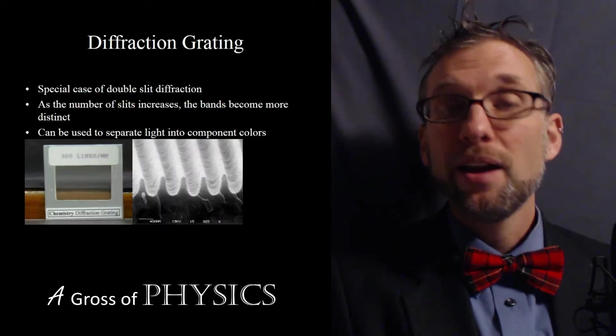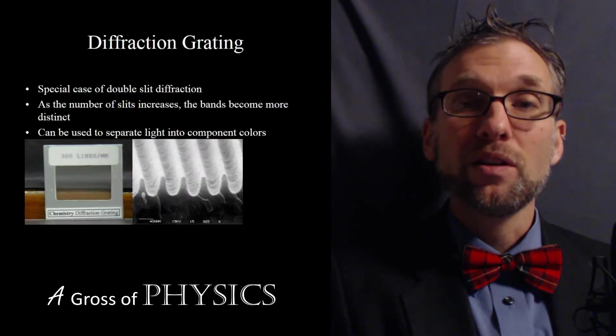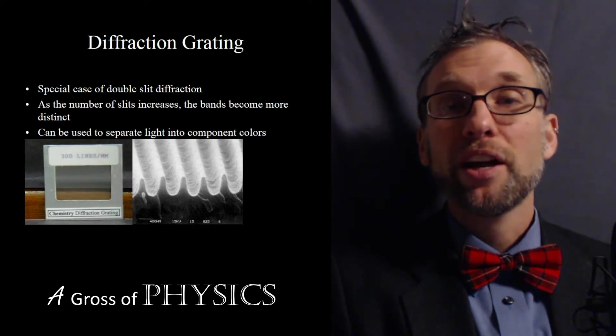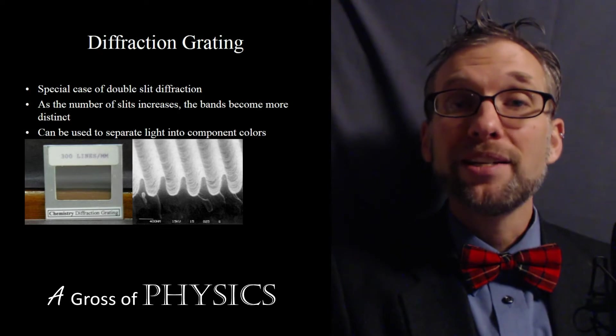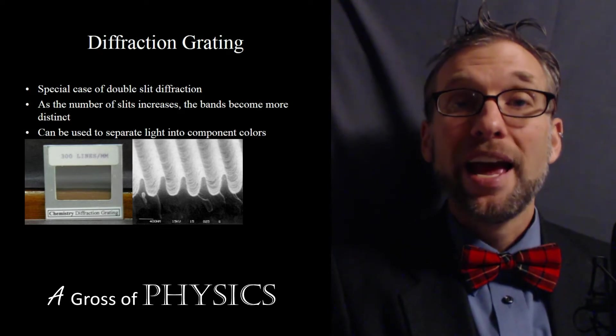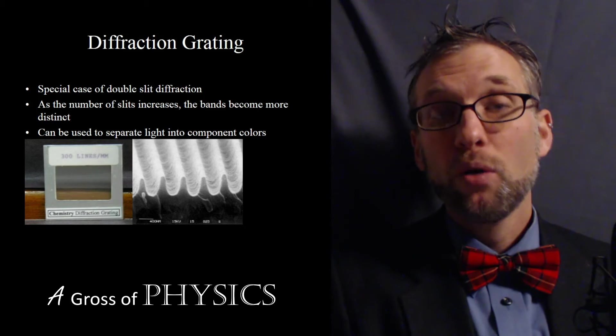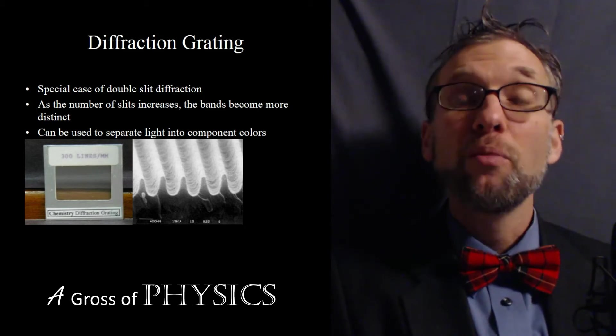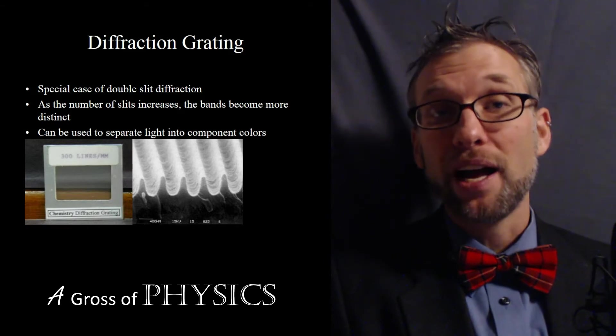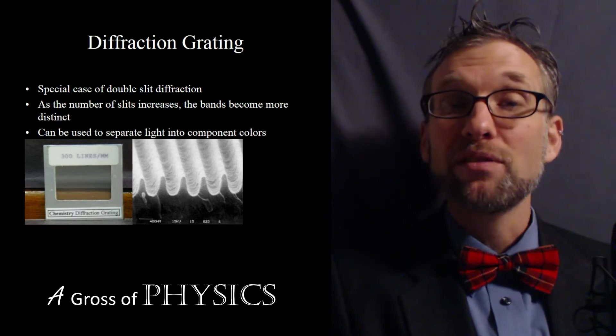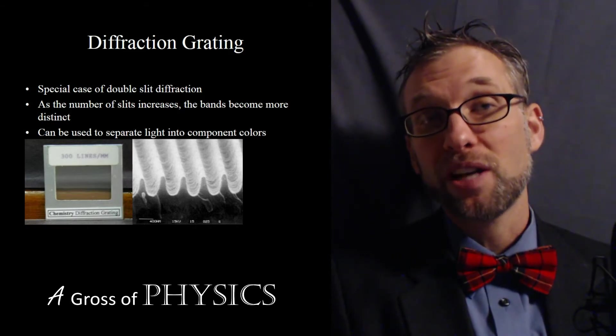Now what's a diffraction grating? Basically, it's a series of very thin lines that could be of the order of thousands per inch. You basically send light through this grating and produce thousands of circular wave patterns. Well the more circles you produce, the more interference that's occurring. And only the strongest waves survive. In fact, only the waves of the component colors will come out the other side.